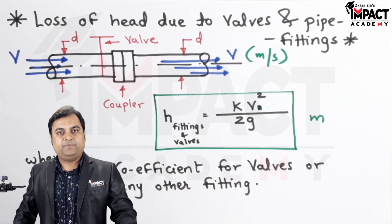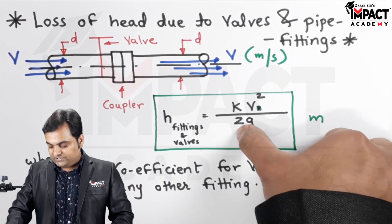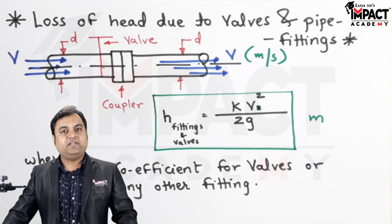Valves or fittings which are present in a given pipeline, and the unit would be in terms of meter. 2 is a constant, g is having the value of 9.81 meter per second square, and this is a case of...